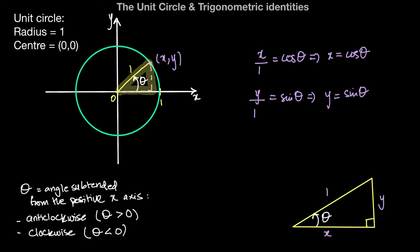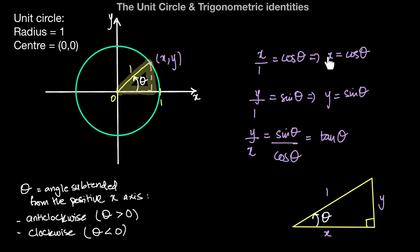The ratio between the side opposite and adjacent to angle theta — that is, the ratio between the y and x coordinates — can be expressed as sine of theta divided by cosine of theta, which equals tan of theta. So the three basic trigonometric functions are: x = cosine θ, y = sine θ, and y/x = tan θ.